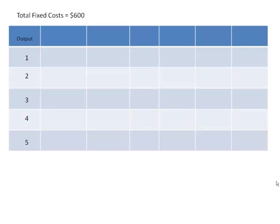Well, the first cost we've already got — fixed costs. Let's look at the second element of costs, the variable costs. These will be the total variable costs at each increased level of output. Then we'll look at the total costs overall — that is the variable plus the fixed costs added together. So at an output level of one, we are told, this is a given, that our total variable costs are $100. Therefore, our total costs are fixed plus variable costs, 600 plus 100 — that's $700.